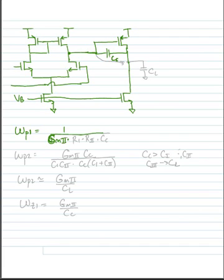We had a second pole, omega p2, that was equal to gm2 divided by gm2 times cc divided by c1 times c2 times c2 times cc times c1 plus c2.